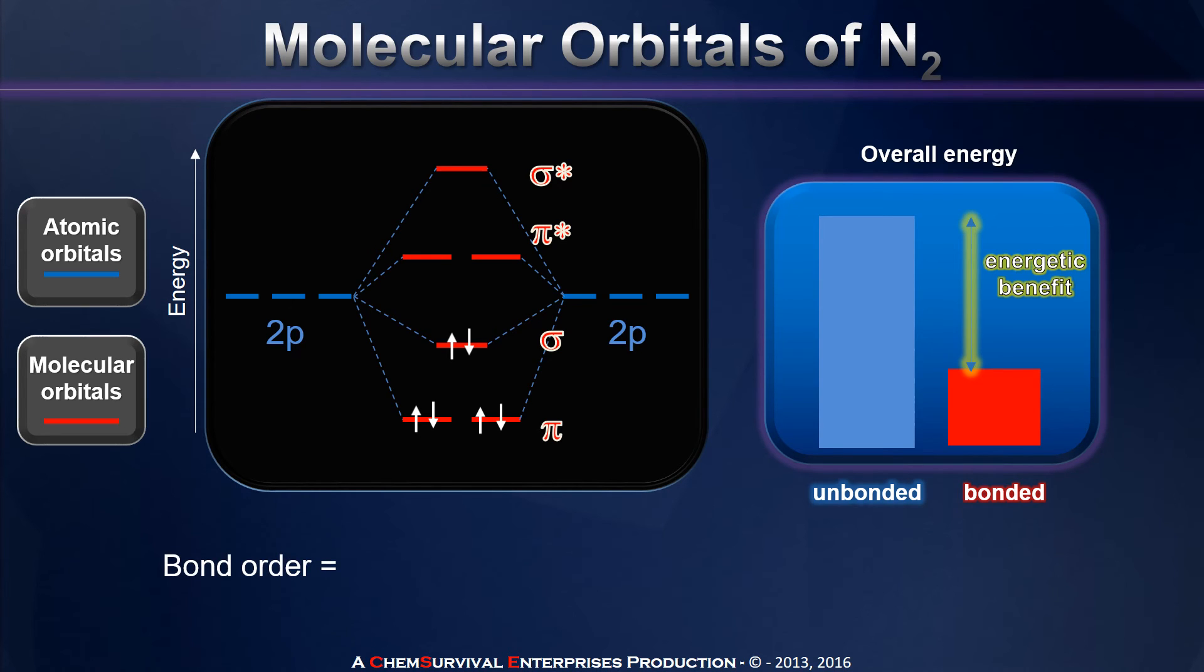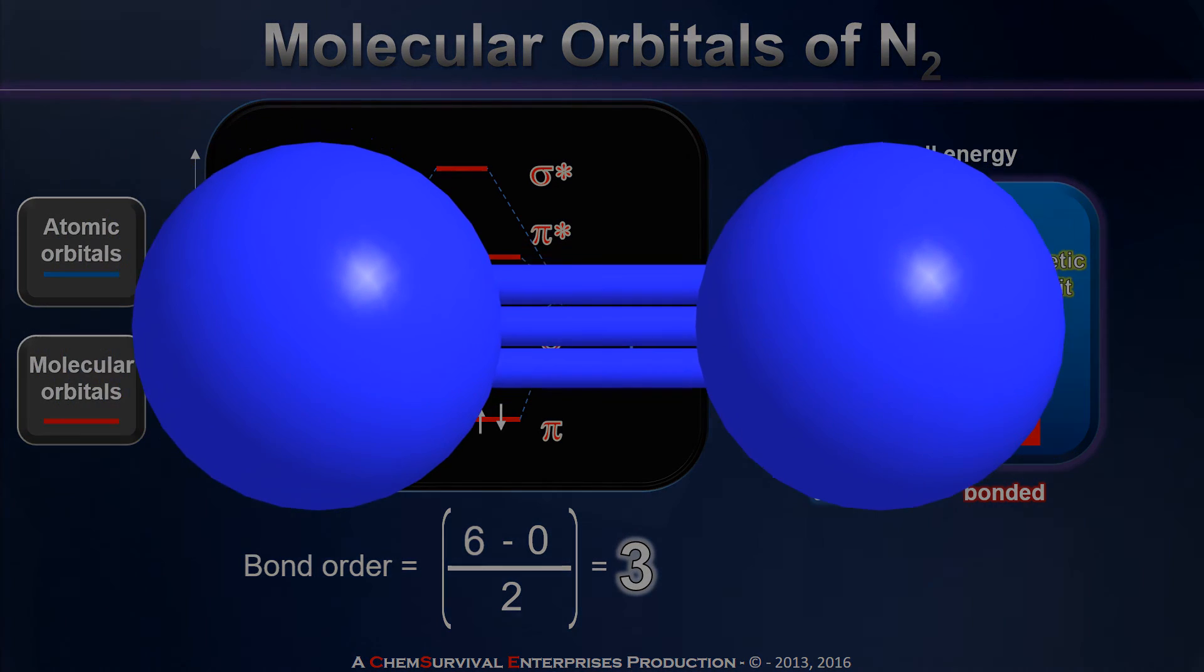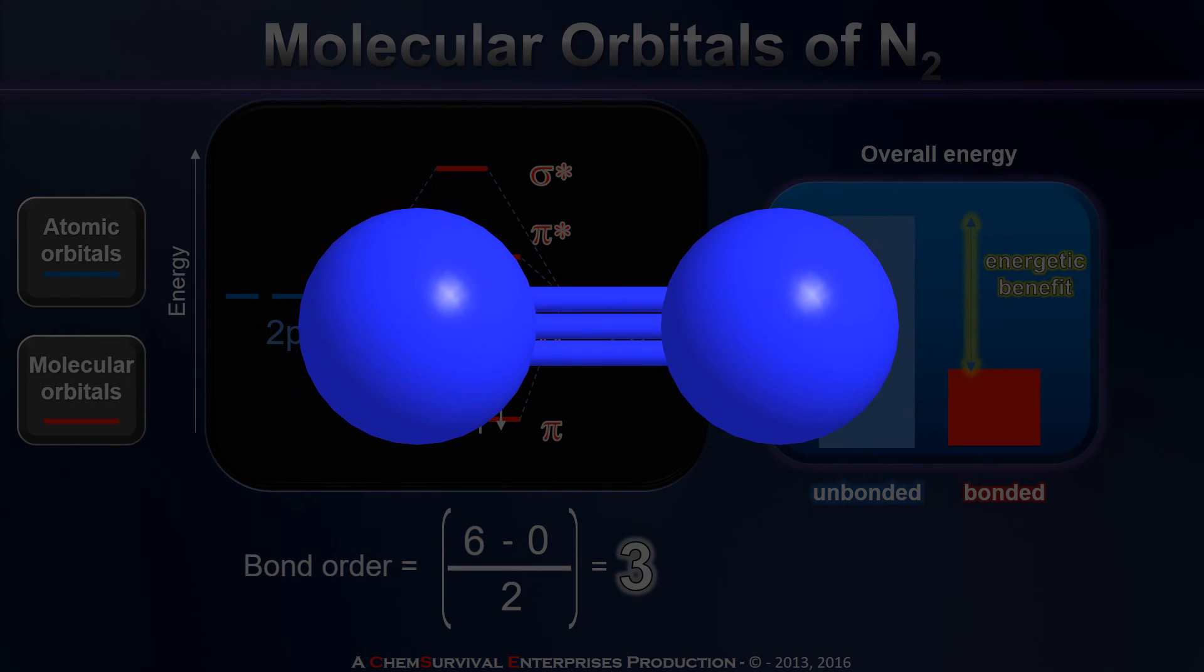When we calculate the bond order of an N2 molecule, we find that having six bonding electrons and absolutely no antibonding electrons, we expect a nitrogen molecule to have a triple bond. This is a very strong bond, which makes nitrogen gas almost completely inert. And again, when we go into the lab and study nitrogen, that's exactly what we see. A diatomic molecule with a triple bond.